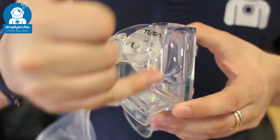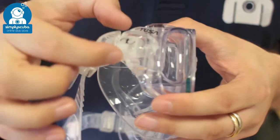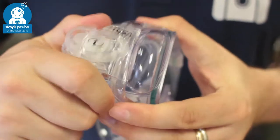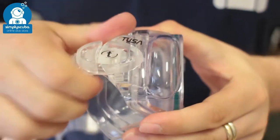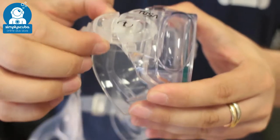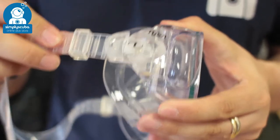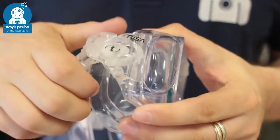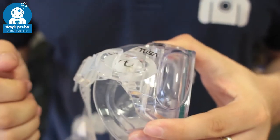Now attached into the frame itself, you have a hinged buckle system, so that buckle can move up and down. It's nice and stiff, so it's going to hold in its position wherever you set it, but you can move it up and down depending on where you want that mask strap on the back of your head.